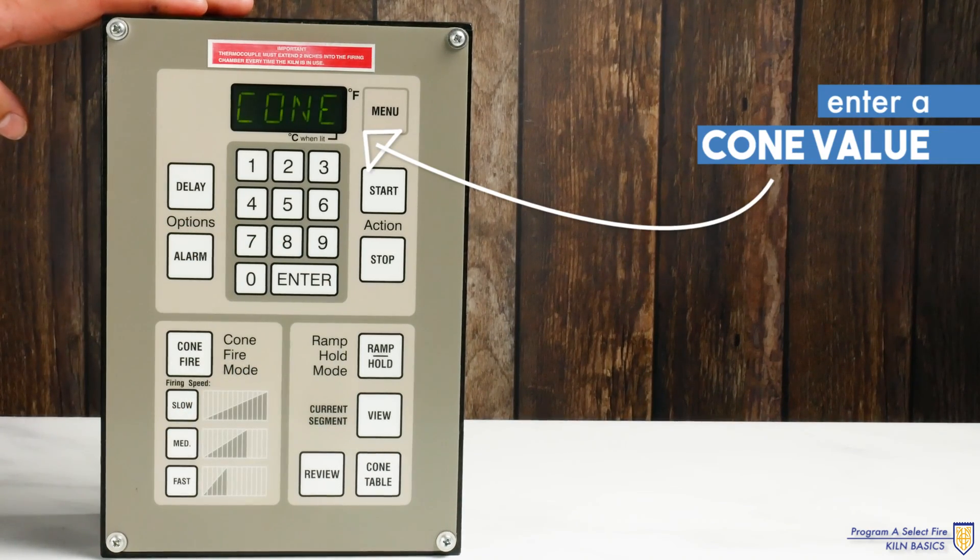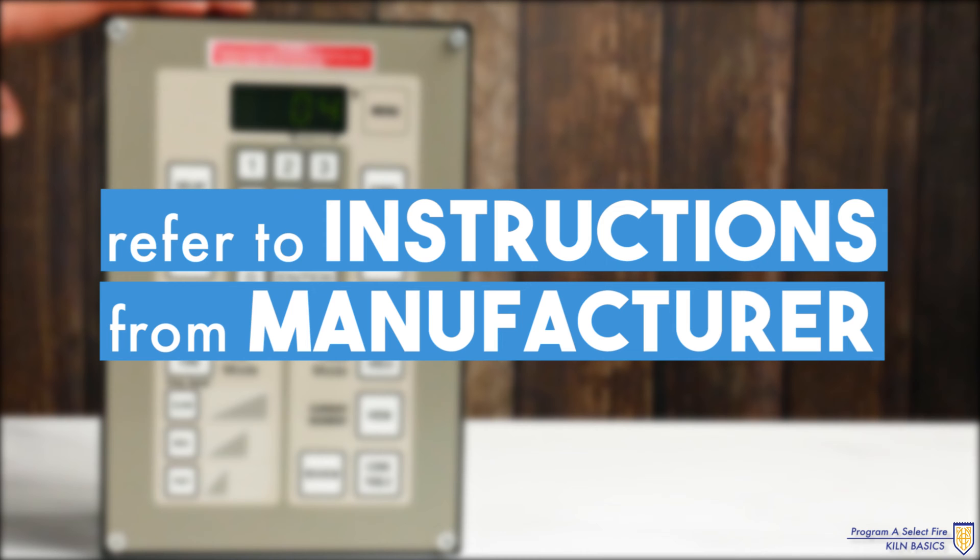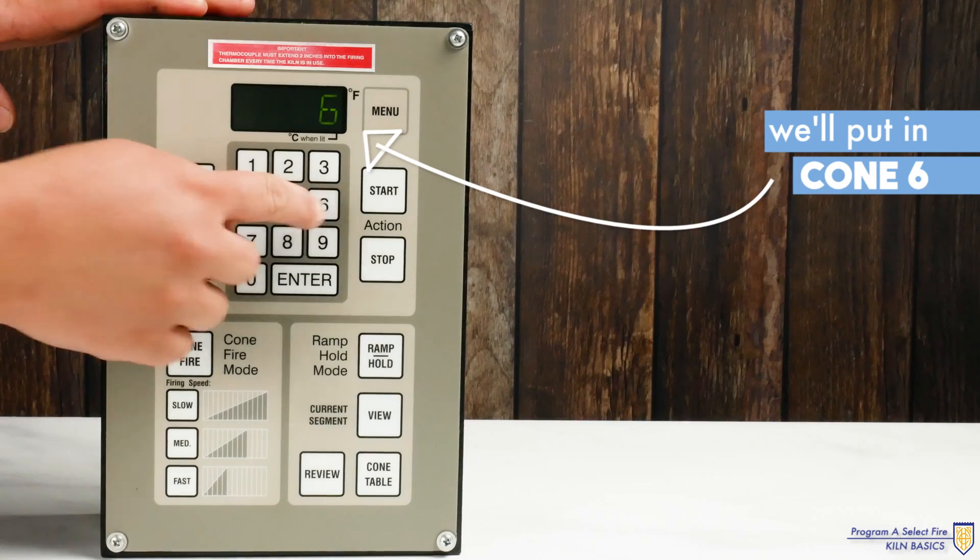It will then prompt you to put in a cone value. Refer to the instructions from the manufacturer of your glaze for what cone value you are aiming for. We will put in cone 6.